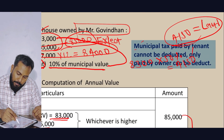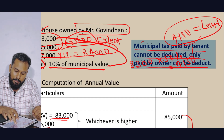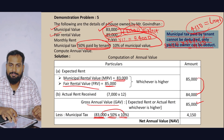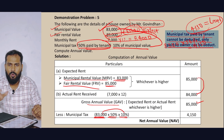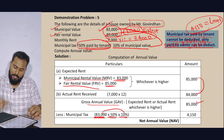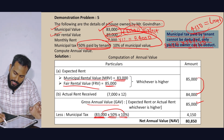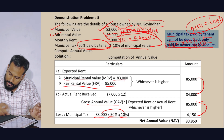Key point: Municipal Tax paid by the tenant cannot be deducted. Only Municipal Tax paid by the owner (landlord) can be deducted. The Gross Annual Value is 85,000.